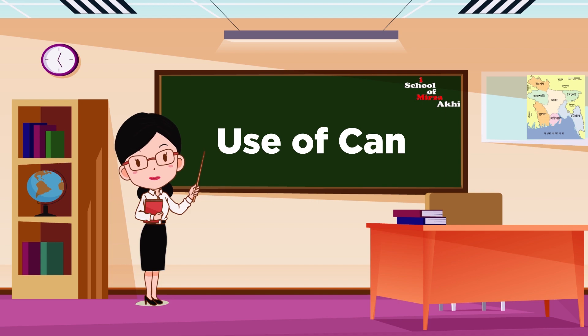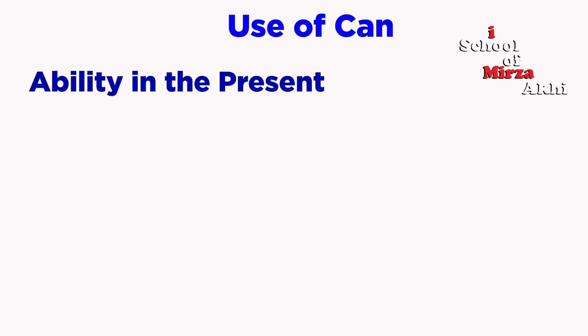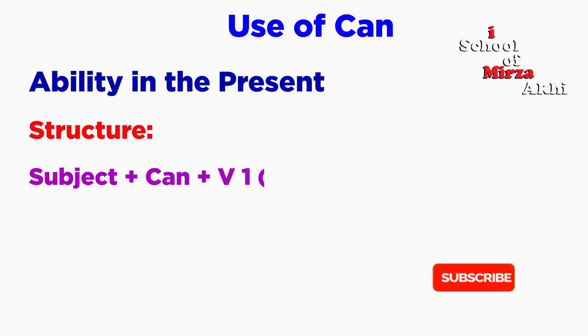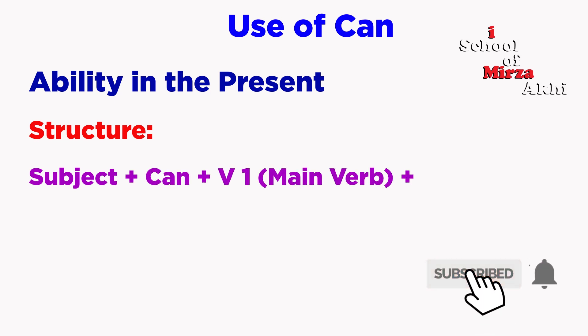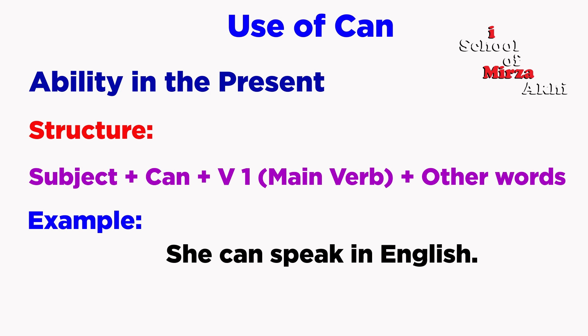Use of Can. The first use is ability in the present. For example: She can speak in English.